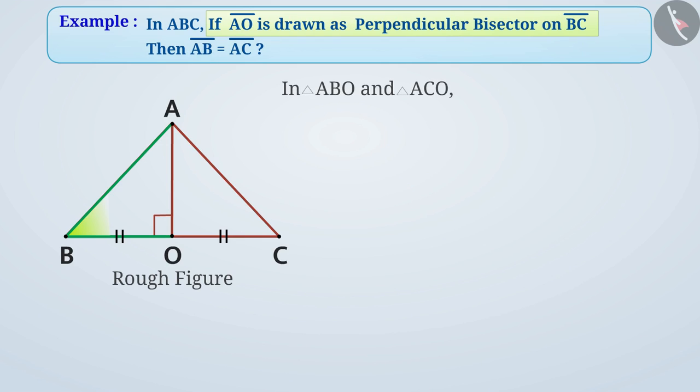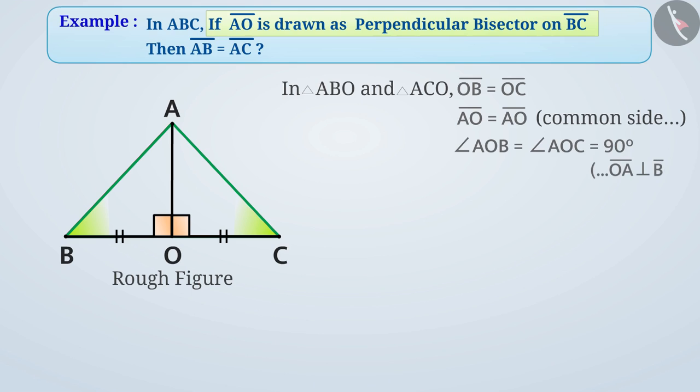In triangle ABO and triangle ACO, we can see that OB is equal to OC cause O is midpoint of BC. AO is equal to AO because common side of triangle ABO and triangle ACO. Angle AOB is equal to angle AOC is equal to 90 degrees cause AO is perpendicular bisector of line segment BC.